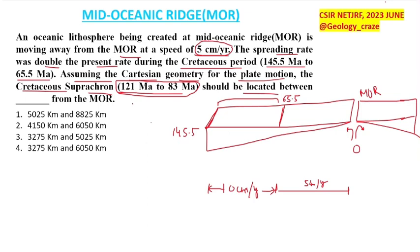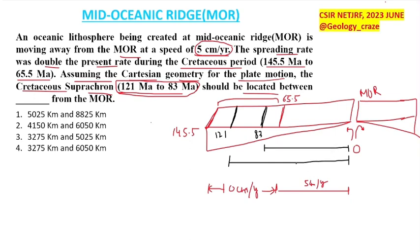Now we have to calculate the position of the Cretaceous superchron. Let me change the color. Suppose 121 Ma lies here, and 83 Ma lies at another point. We have to calculate: how much distance is the 121 Ma boundary from the mid-oceanic ridge, and what is the distance between the 83 Ma and 121 Ma positions?